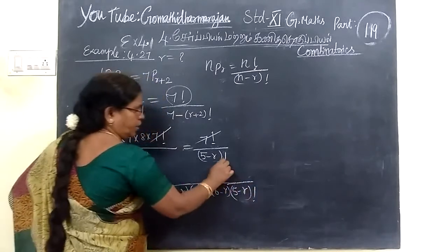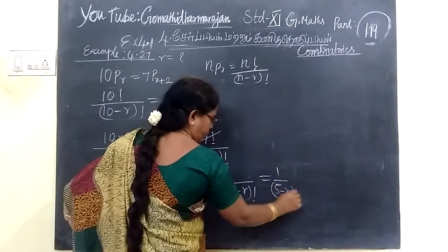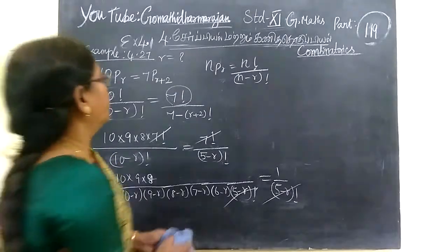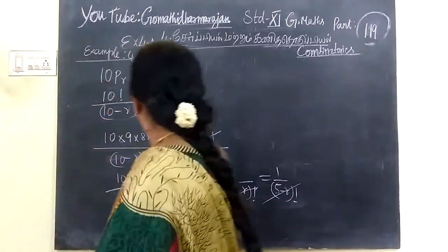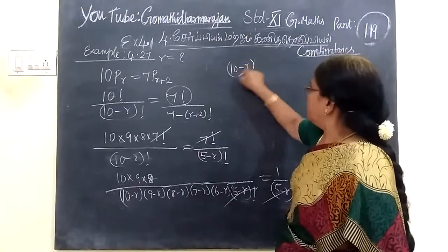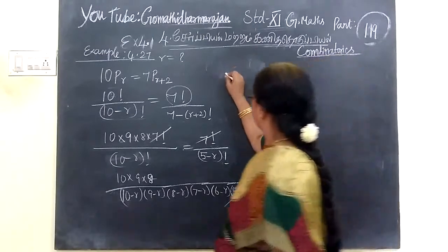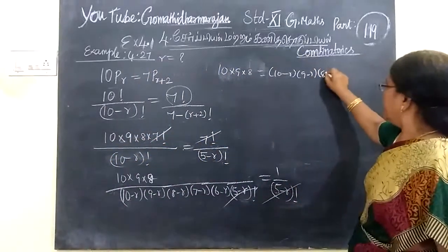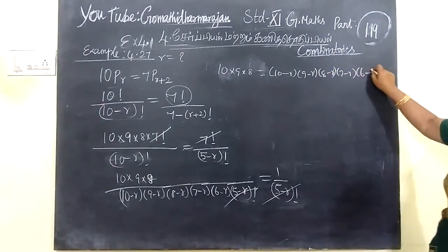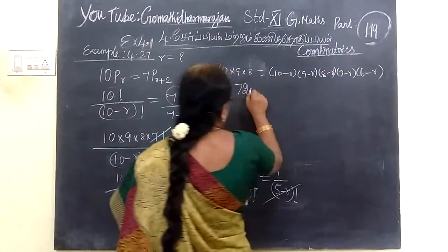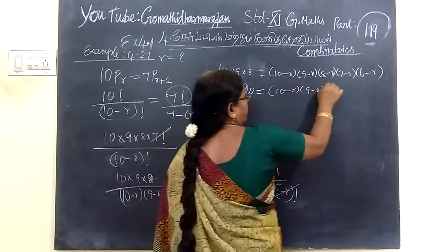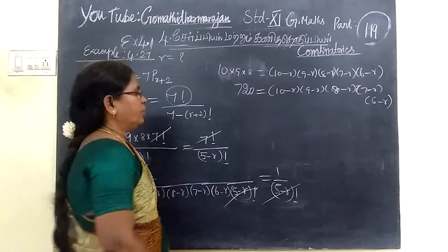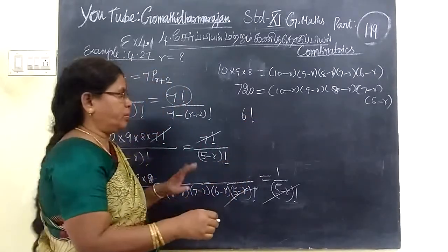Now how will it happen to R. 1 by 5 minus R and then 6 minus R, then 7 minus R, then 9 minus R. All divided 10 into 9 into 8 equals 9 minus R, 8 minus R, then 7 minus R, 6 minus R. Because this is 720. Yeah, 720 equals the same thing 9 minus R, 8 minus R, then 7 minus R, 6 minus R. So 720 is nothing but 6 factorial.